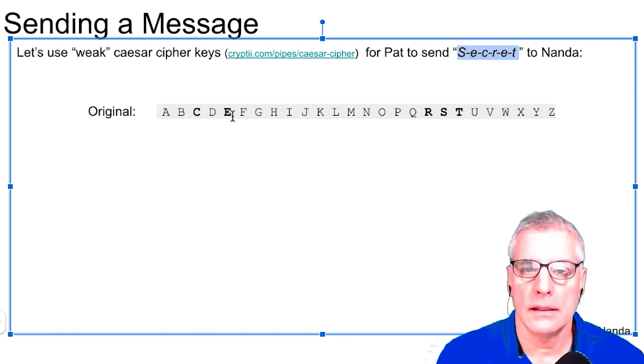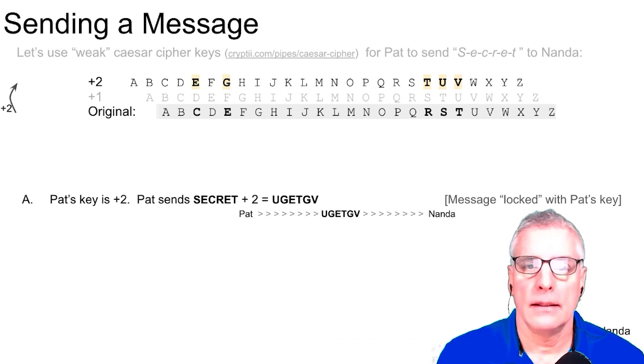So we start out and highlight these letters. So we have S right there, S-E-C-R, another E, and T, highlighted them in bold. So secret. So let's say that Pat, the shift for Pat, is going to be plus two. So the S for secret would go plus one would be T, plus another would be U.